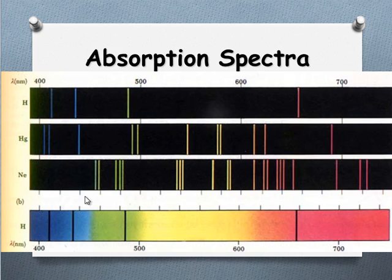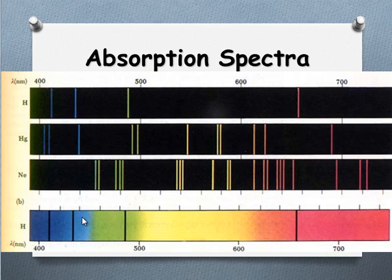Here we can see hydrogen, helium, and neon emission spectra. Below, we have white light that's been passed through a gas, producing an absorption spectrum. It's fairly easy to spot which lines are missing and which ones correspond. In this case, the absorption spectrum shown corresponds to hydrogen gas.